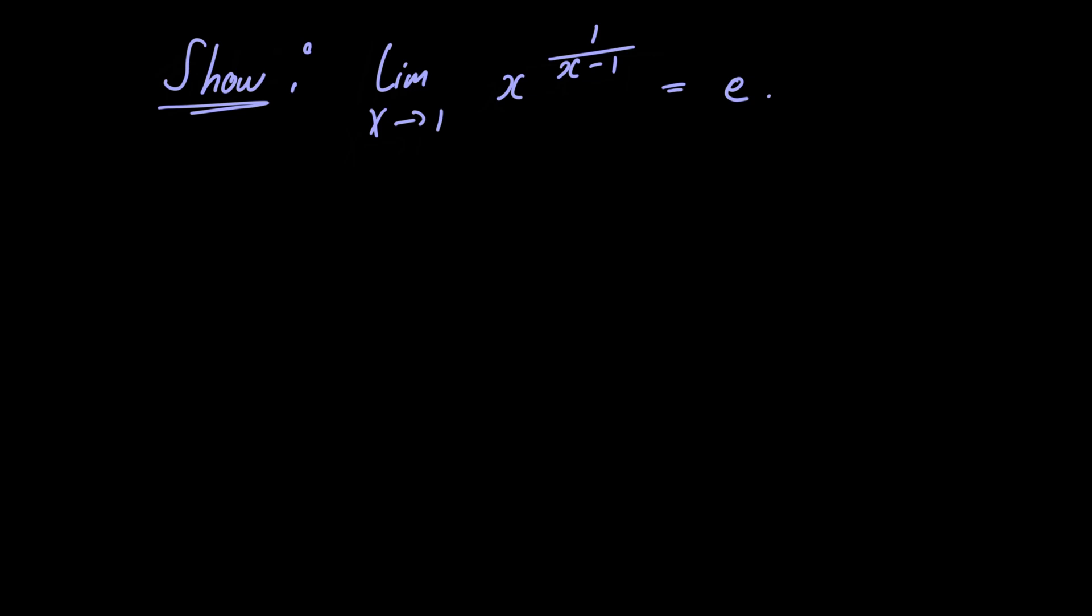Let's begin by rewriting the limit in the following form. We have the limit as x goes to 1 of e raised to the natural logarithm of x raised to 1 over x minus 1.